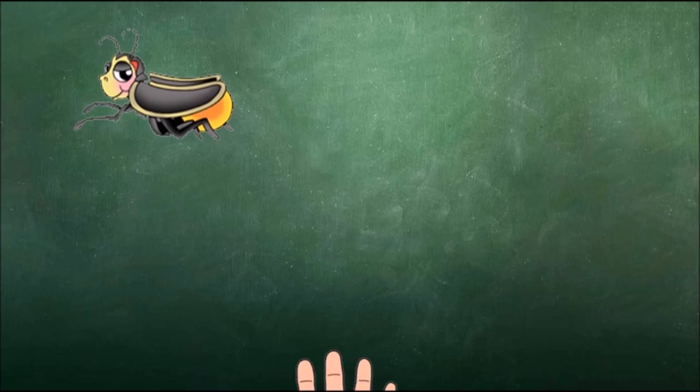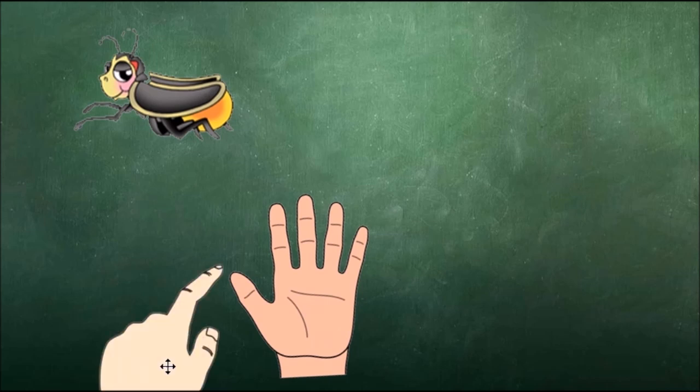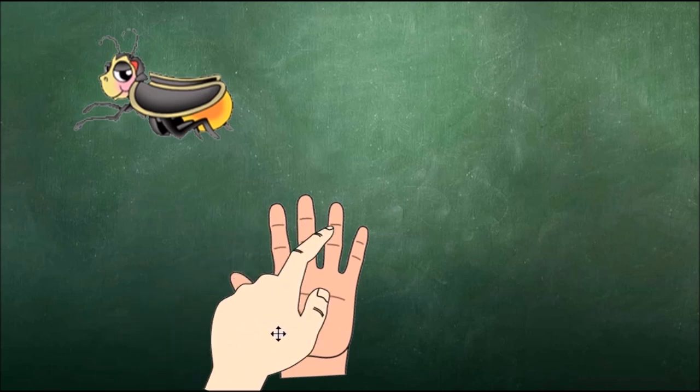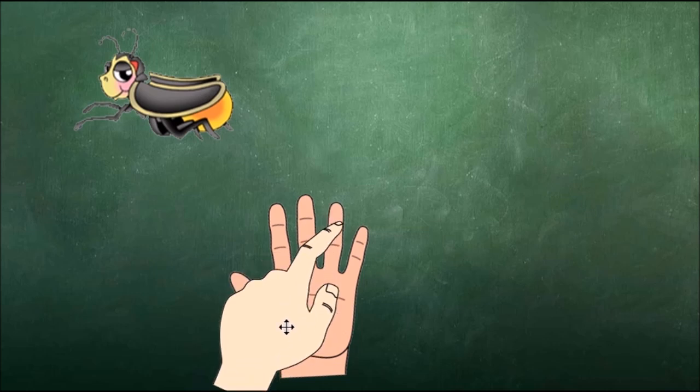First, I would show students a picture and ask them what the name of the picture is. What is this a picture of? Students respond with the word bug. We would show the individual sounds on our fingers for the word bug: B-U-G. What is the last sound we hear in bug? Students respond with G.